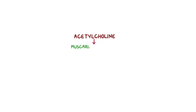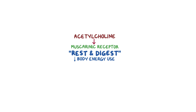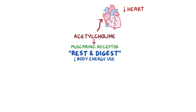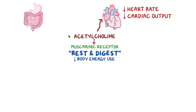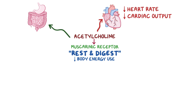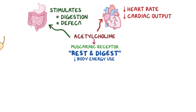Acetylcholine binds to muscarinic receptors on the cells of the target organs, allowing the parasympathetic nervous system to trigger a rest and digest response — keeping the body's energy use as low as possible to stimulate activities like digestion. It acts in the heart, slowing the heart rate and reducing cardiac output. In the gastrointestinal tract, it increases motility to stimulate digestion and defecation.